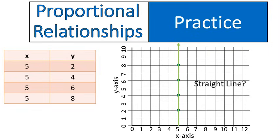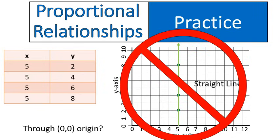Hmm. Is it a straight line? Well, yeah, that's a perfectly straight line. However, it does not go through the origin. For it to be a proportional relationship, it needs to go through the origin and be a straight line. This is not a proportional relationship.